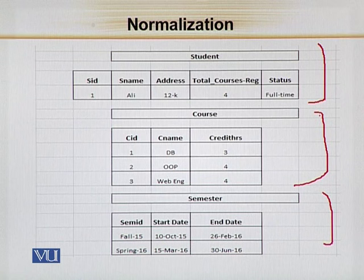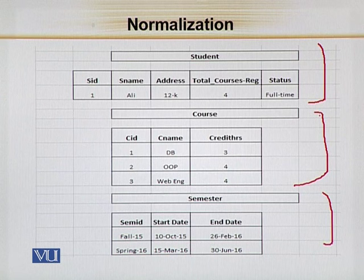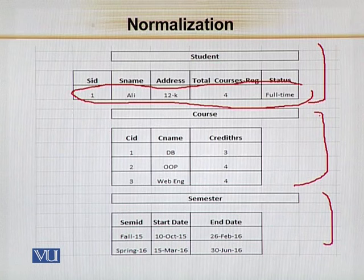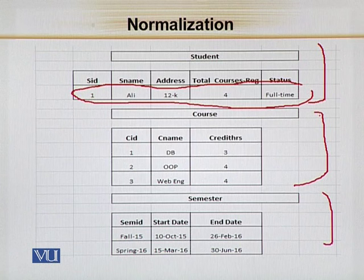अब repeating group और non-repeating group के तरमयान आपको फर्क समझना है. Non-repeating group यह होता है — ऐसा group जिसके अंदर report में आपके पास सिर्फ data की एक ही row मौजूद हो. Like, जो student है, उसके अंदर जो data insert किया हुआ है वो एक row में मौजूद है — मतलब SID 1, S name Ali, address 12K, total courses registered 4, and status full time या part time. तो यह basically non-repeating group है.